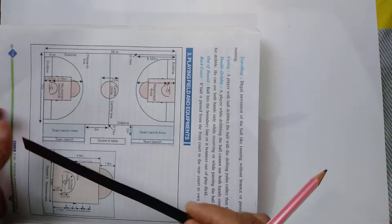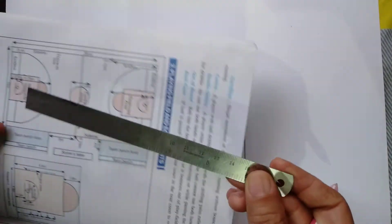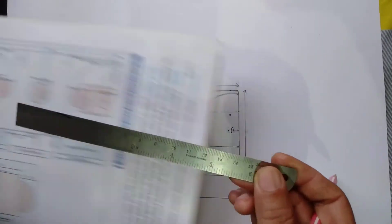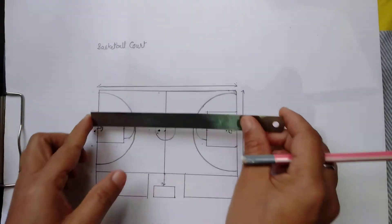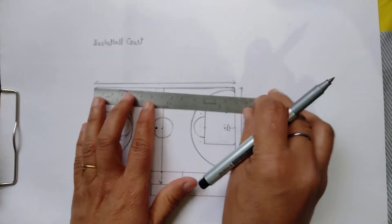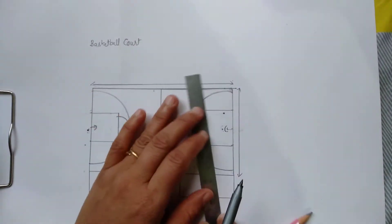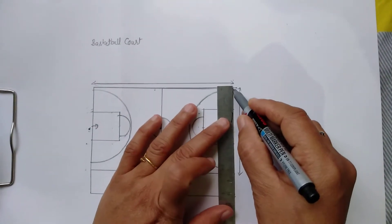Now we measure in centimeters. The court length according to scale is 14 centimeters, breadth 8 centimeters.